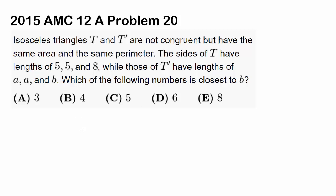2015 AMC 12A Problem 20. Isosceles triangles T and T' are not congruent, so they are not the same triangle. They are not congruent, but have the same area and the same perimeter. Very interesting.